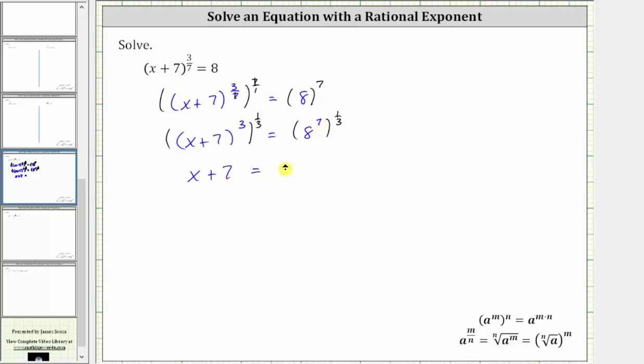On the right, we have eight raised to the power of seven times one-third, or seven-thirds. Now let's simplify eight raised to the power of seven-thirds. We'll convert to radical form. Because the denominator is three, we have the cube root. The radicand is eight, and because this simplifies perfectly, we'll write the exponent of seven outside the cube root. We could put it under the cube root, but since it simplifies perfectly, this is much easier.